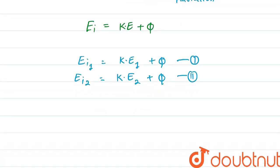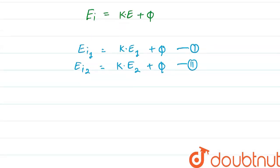And if we divide 1 by 2, we will be getting Ei1 upon Ei2. This will be equal to kinetic energy in first case plus phi upon kinetic energy in second case plus phi.